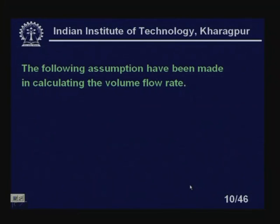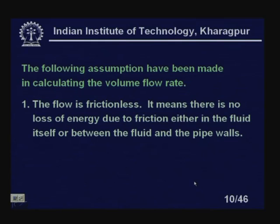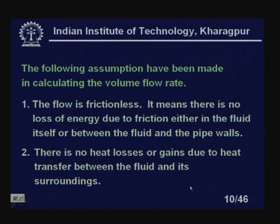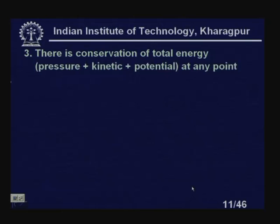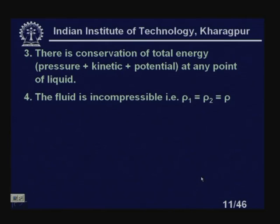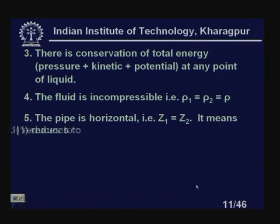The following assumptions are made in calculating volume flow: the flow is frictionless, with no energy loss due to friction in the fluid or between fluid and pipe walls; there are no heat losses due to heat transfer; there is conservation of total energy — pressure plus kinetic plus potential — at any point; the fluid is incompressible, so ρ1 = ρ2 = ρ; and the pipe is horizontal, meaning Z1 = Z2.